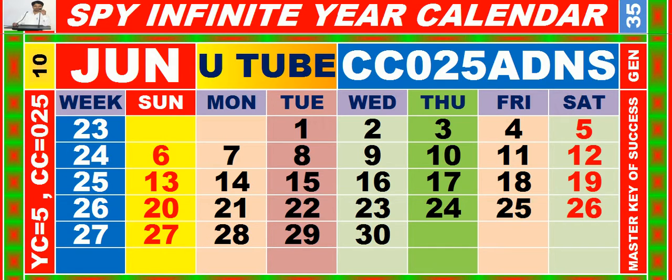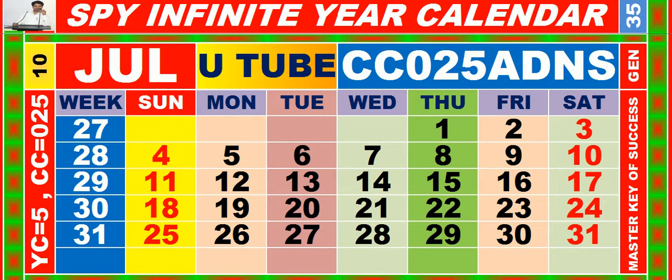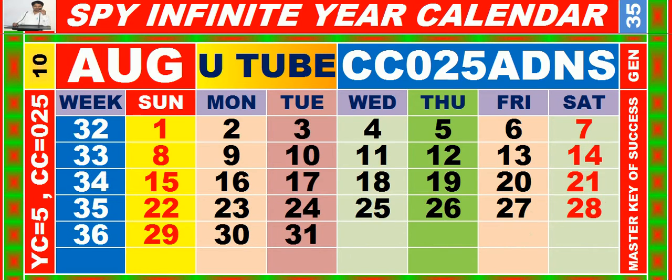Calendar for the month of July, having calendar code equal to 025. Calendar for the month of August, having calendar code equal to 025.